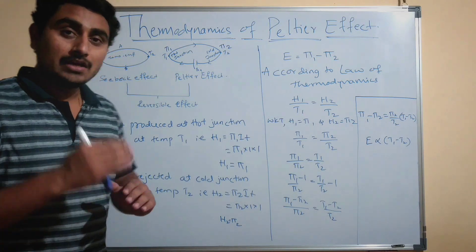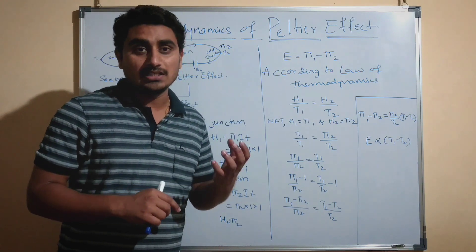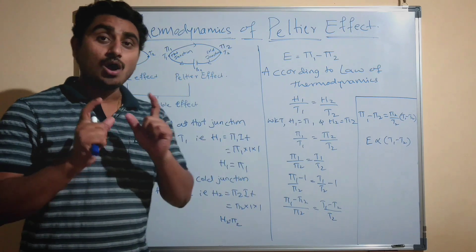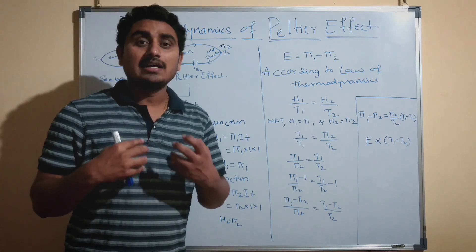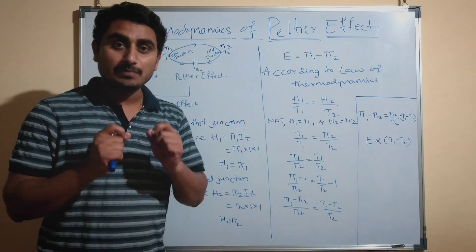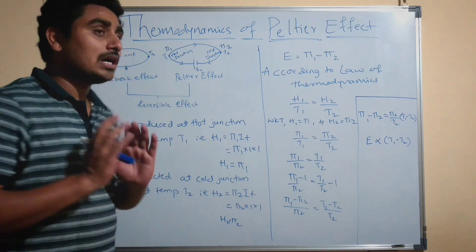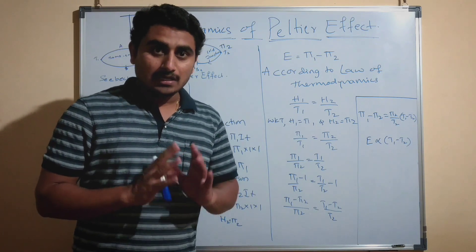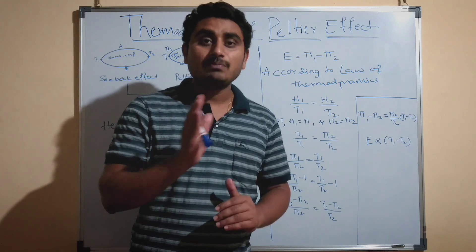According to the Peltier effect, if we pass current through the thermocouple, heat is absorbed at one junction at temperature T1 — this junction we call the hot junction. At the other junction, heat is rejected at temperature T2 — this junction we call the cold junction. The Seebeck effect and the Peltier effect are both reversible effects. Thus, the thermocouple acts as a reversible heat engine.